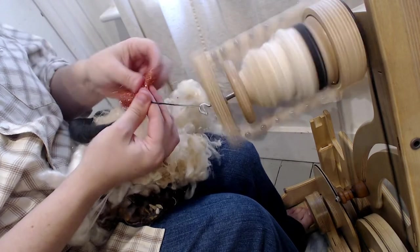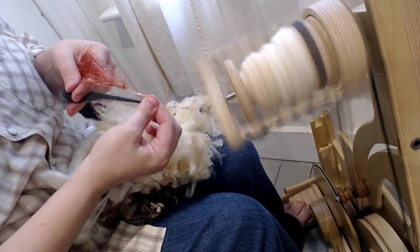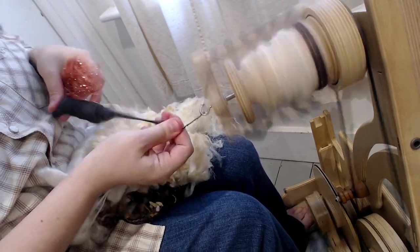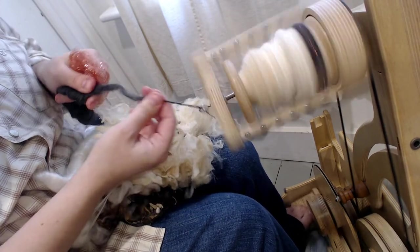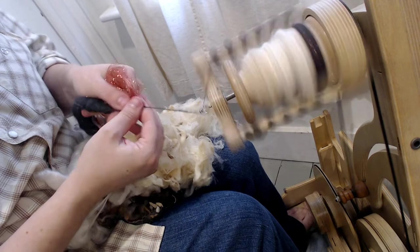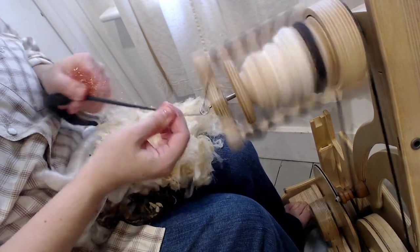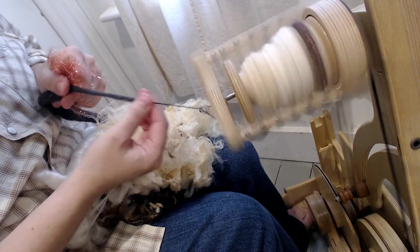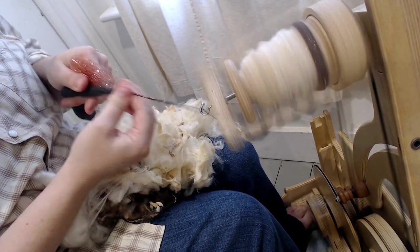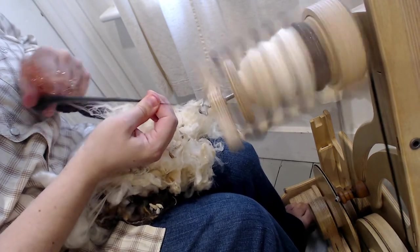And we can add some sparkle to this rolag as well by spinning the angelina and the bamboo at the same time. Just let the fibers catch on each other and don't worry about perfect consistency. The randomness gives these yarns a really beautiful organic look when they're being knit or crocheted. Something that you definitely cannot get with commercial yarns.